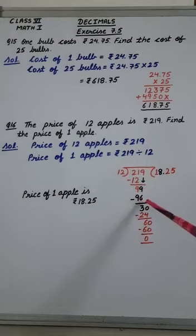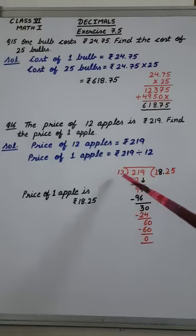12 eights are 96. Remainder is 3. Now 3 is not divisible by 12.